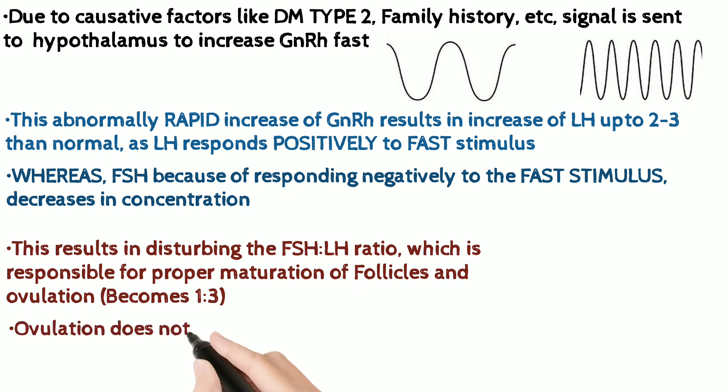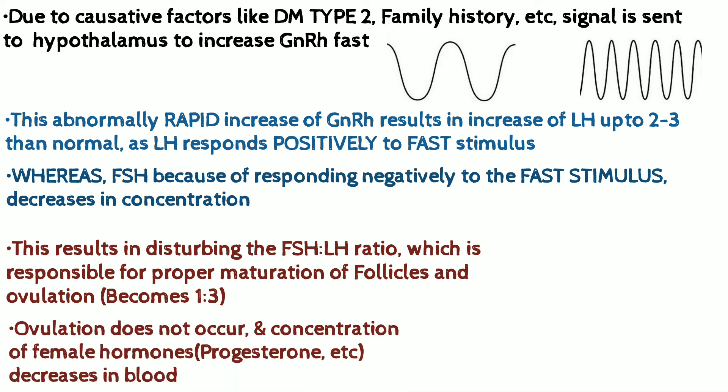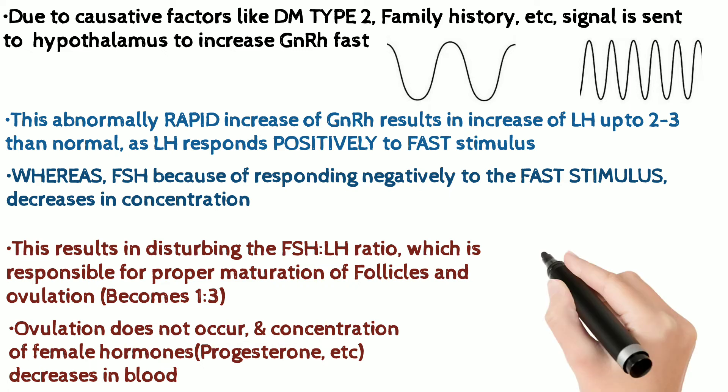The maturation of follicles doesn't occur, ovulation doesn't happen, and in turn, the female hormone concentration decreases in blood.